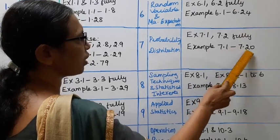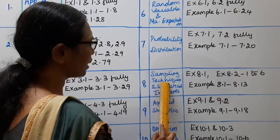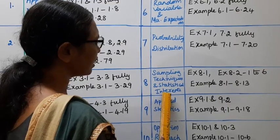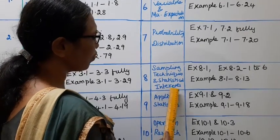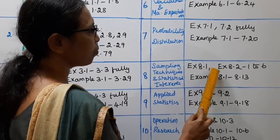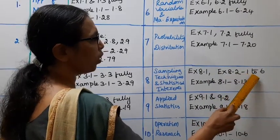Seventh chapter: Probability Distribution. Exercise 7.1 and 7.2 fully. Example 7.1 to 7.20.